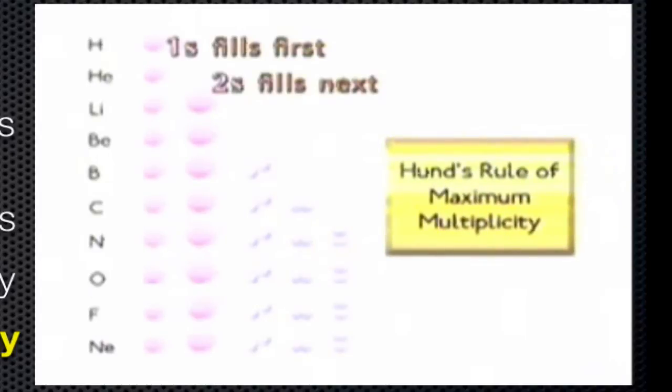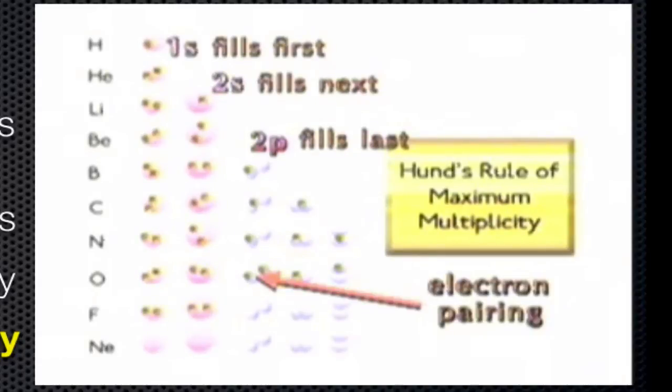This diagram shows how the orbitals of the elements from one to ten fill with electrons, filling the orbitals of lowest energy first. The P-orbitals take one electron each and after this, pairing begins. This is repeated with all of the elements. It is called Hahn's rule of maximum multiplicity.